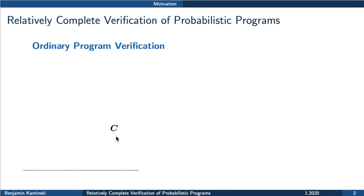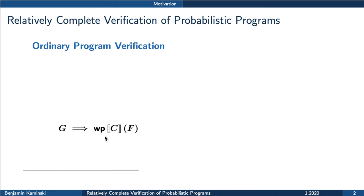We are given a program C, a specification: a post condition F and a precondition G. We want to verify that whenever we start in precondition G, the execution of C will terminate in post condition F. To verify this, we first determine what is the weakest precondition such that execution of C takes us to post condition F, and then we check whether our specified precondition G implies this weakest precondition.